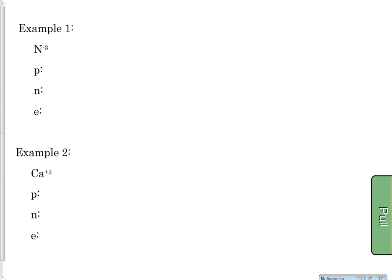Let's practice. Get your periodic table ready. For nitrogen, find its atomic number — you should find it's seven, meaning it has seven protons. Now look at the charge in the upper right corner: it is negative three. Because it's negative it gained electrons, and the three tells us it gained three. So if it originally had seven electrons, three more makes it ten electrons.